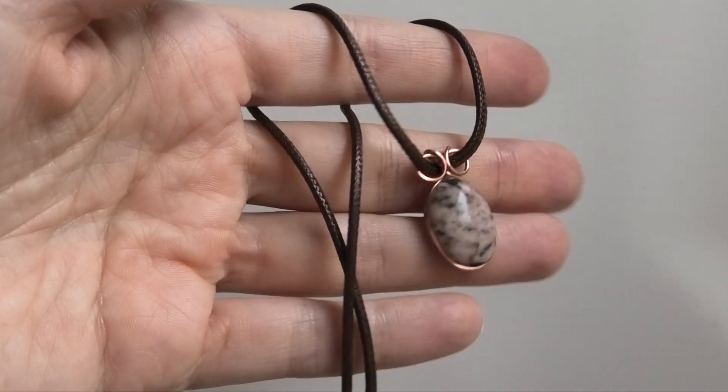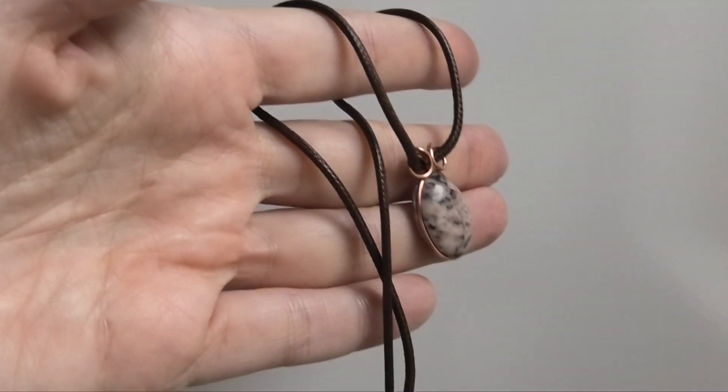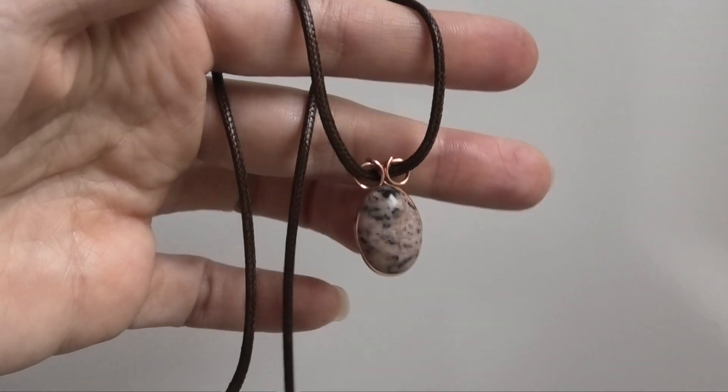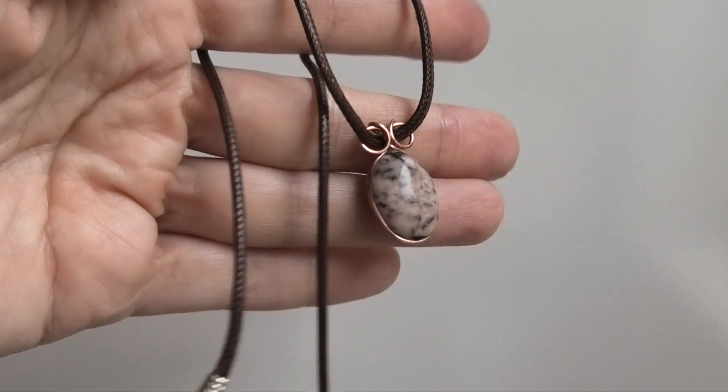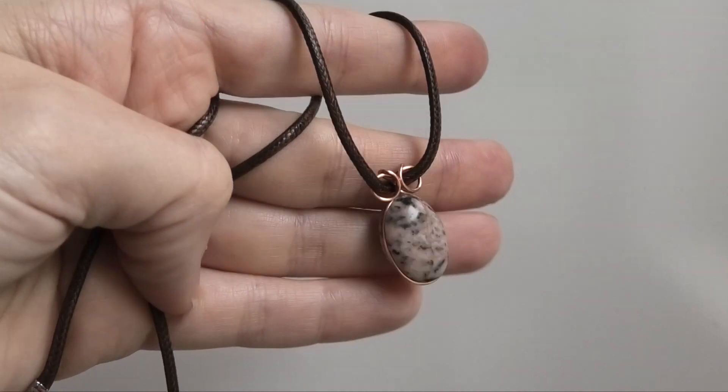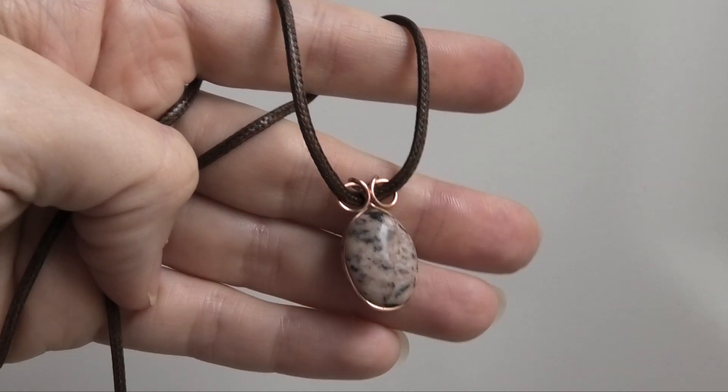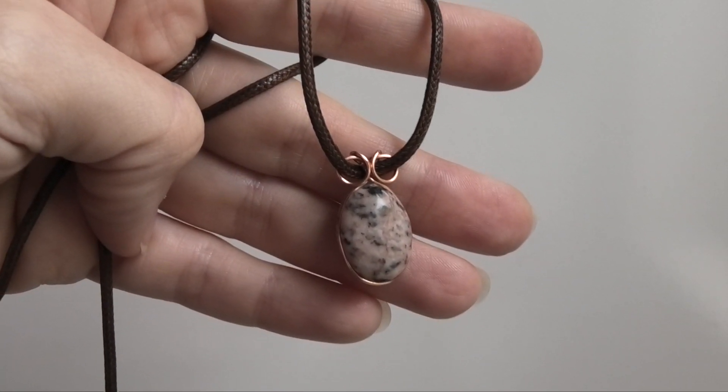But that's it. This is just a very basic simple way using one piece of wire, how to make a groove, how to turn a grooved cabochon into a pendant. So I hope you enjoyed. Thank you so much for watching and I'll see you next time. Bye.